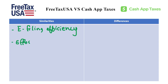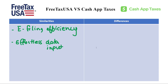The next similarity is effortless data input. No more manually entering W-2 information or wrestling with complex forms. Both FreeTaxUSA and Cash App Taxes integrate with various tax data providers, allowing you to import your W-2s and claim the standard deduction seamlessly.